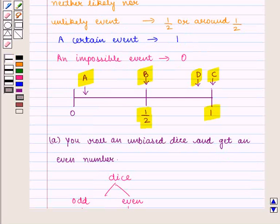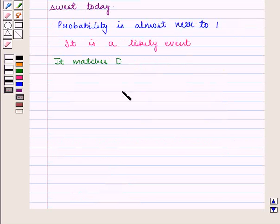Thus we have seen how we can represent probabilities on the number line. This completes our session. Hope you enjoyed this session. Thank you.